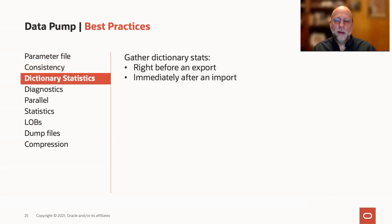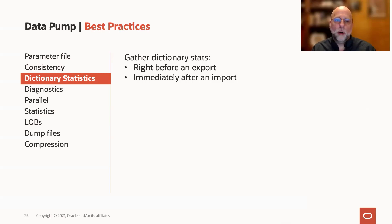In terms of performance, it's a really good idea to gather dictionary stats right before an export. The reason is that we're going to be performing a lot of queries on your dictionary as part of that export. So by having the dictionary stats good and current, our queries on user$, OBJ$, source$, tab$, and so on will just run that much faster.